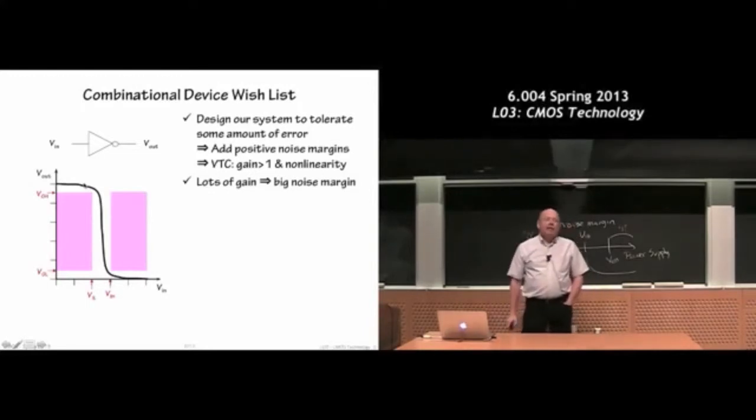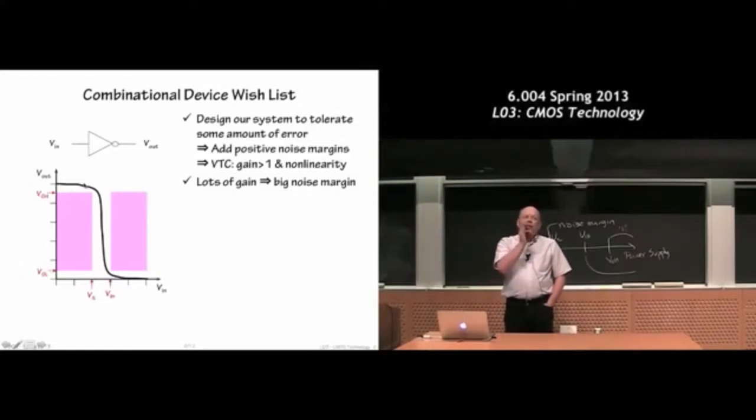If we have lots of gain, what's gain? Gain is the measure—if I make a little bit of change on the input voltage, how much of a change in output voltage do I get? A device with lots of gain would have a big change in output given only a little change on input. How is that reflected in the graph? Graphically, gain is represented by the slope of that curve.